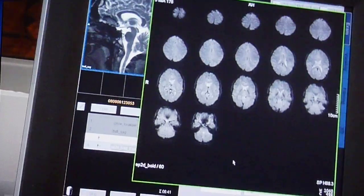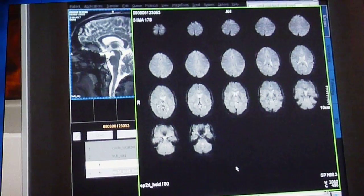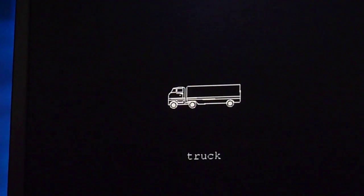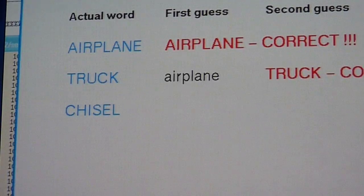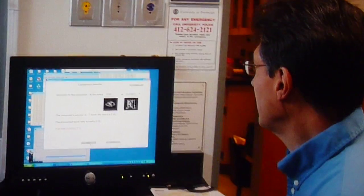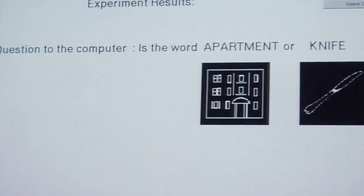In one experiment, a subject's brain is scanned as he is asked to think about one word from a pair. A computer algorithm trained with brain activity data from other people is then tasked with determining which word the subject was thinking of.